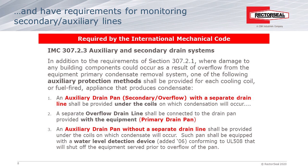Method three uses a water level detection device — usually a float switch or electronic sensor — that must conform to the requirements of UL 508, located in an auxiliary drain pan. These detector devices will shut down the equipment before the pan overflows, and there is no requirement for a separate drain line in this method. Method four also uses a water level detection device, but located in the drain line from the primary drain pan or the overflow line from the primary drain pan, rather than the secondary drain pan as in method three.